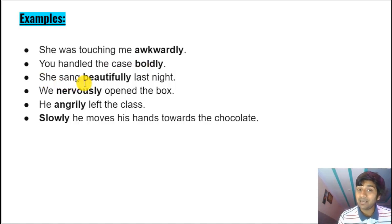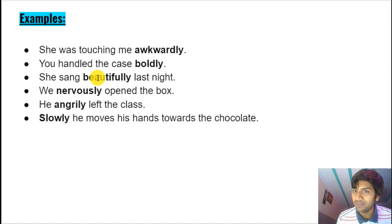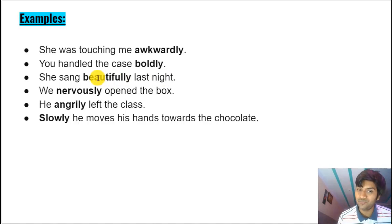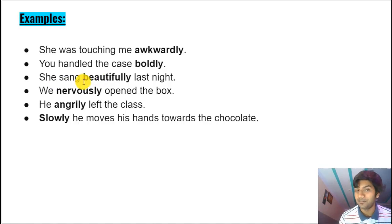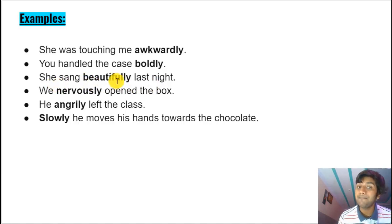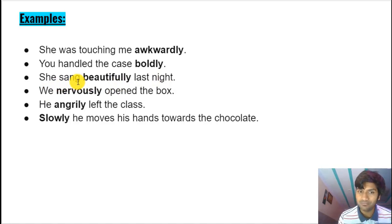'She sang beautifully last night.' Now understand this: if the object is not there, if the verb is intransitive — meaning it cannot have an object — the adverb will come right after the verb. She sang in what manner? Beautifully. Sing is a transitive verb but we are not using an object here, so the adverb follows the verb directly.